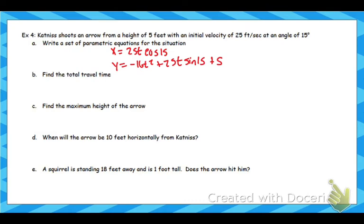So we want to find the total travel time. We want to find when y is equal to 0. So we're going to do 0 equals negative 16t squared plus 25t sine 15 plus 5. Now the difference here is this is going to be a little bit of an uglier equation — we can't just nicely factor out a GCF. We would actually have to use the quadratic formula here. And it's going to be pretty ugly because my b value is going to be 25 sine 15, which is the equivalent to 6.47. So that's going to be really ugly to use quadratic formula on.